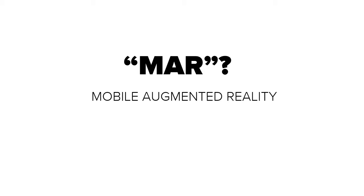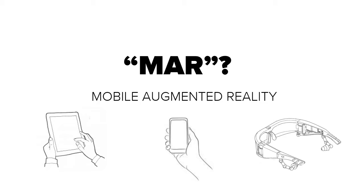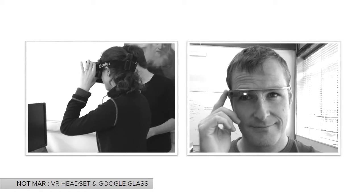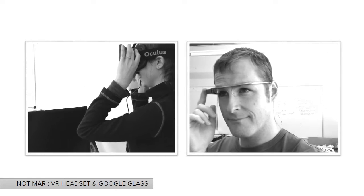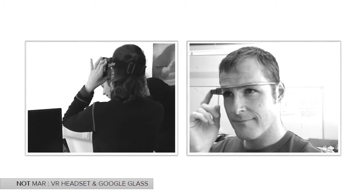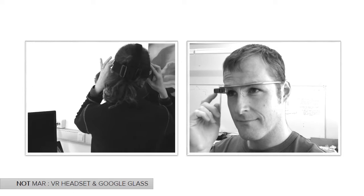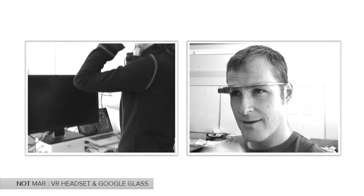MAR is mobile augmented reality, a subset of augmented reality that is applied in truly mobile settings, using devices that are portable — from tablets to mobile phones and head-mounted displays or HMDs. But not devices like the Oculus Rift, which is VR: it presents an immersive environment simulated wholly by the computer. The Google Glass forces the user to specifically look up at a display to see the virtual content — not true AR.